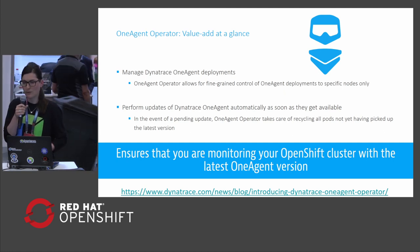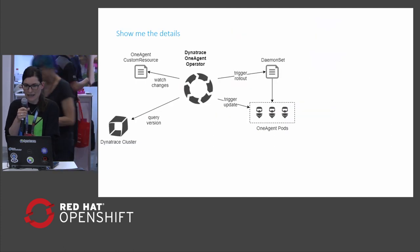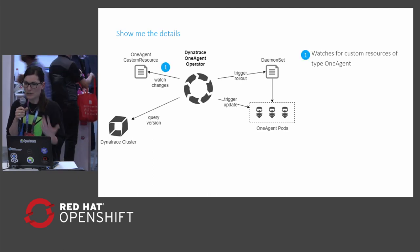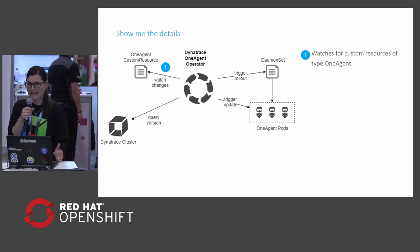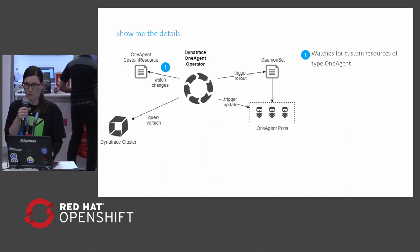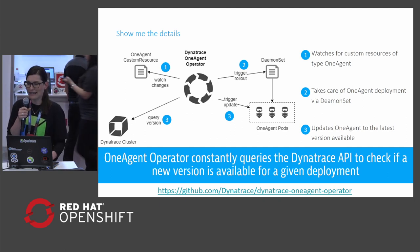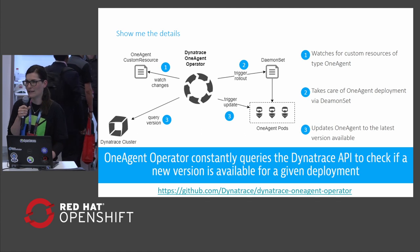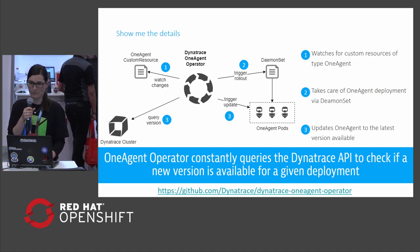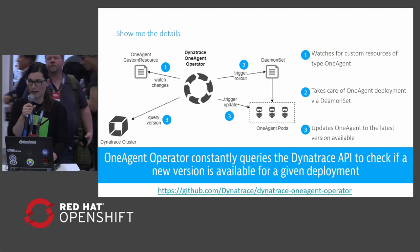Speaking of the GitHub repository and source code of the OneAgent Operator, let's talk about how it actually works. On one hand, the OneAgent Operator watches for custom resources of type OneAgent. It also takes care of OneAgent deployment via a DaemonSet. And last but not least, the OneAgent Operator updates the OneAgent to the latest version available — it constantly queries the Dynatrace API to check if there is a new version available for a given deployment.